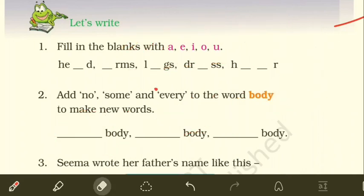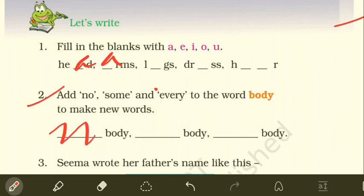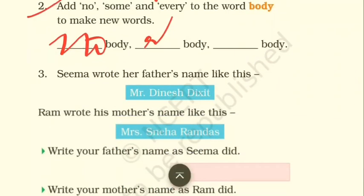Fill in the blank with a, e, i, o, u: 'h_e_d' — head; 'a_r_m_s' — arms. Question two: add 'no,' 'some,' and 'every' to the word 'body' to make new words — nobody, somebody, everybody. Do these on your own.